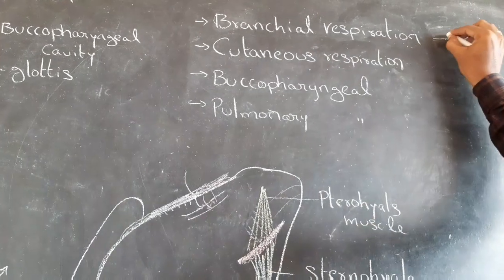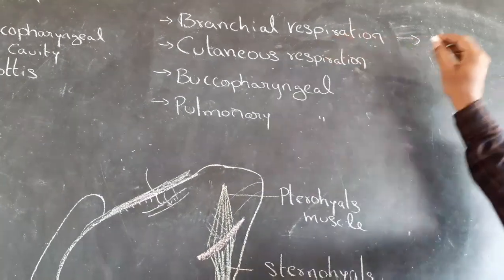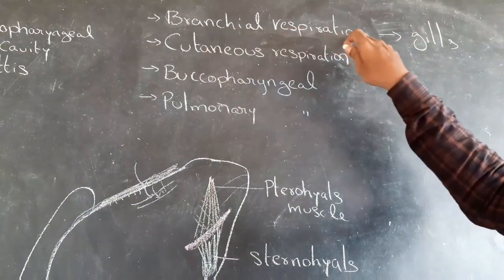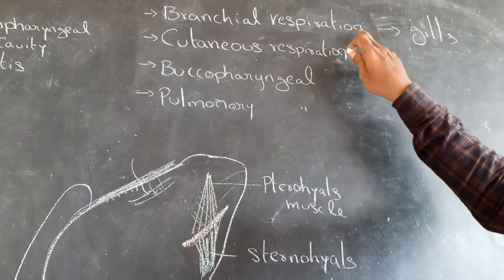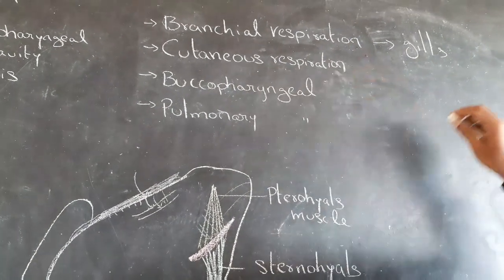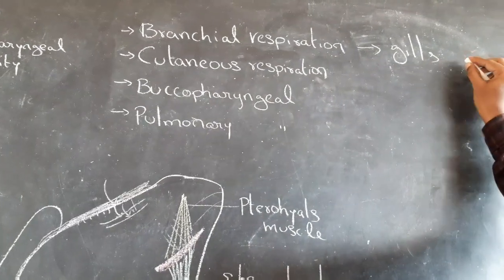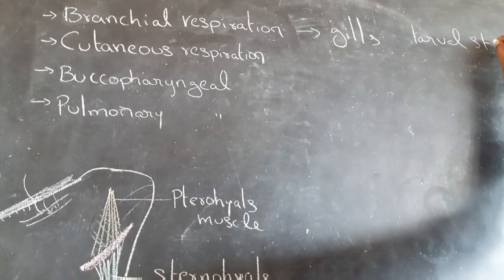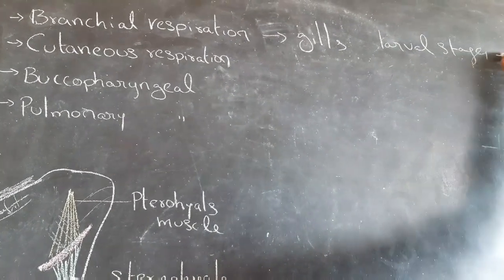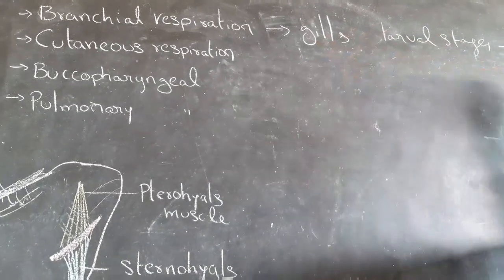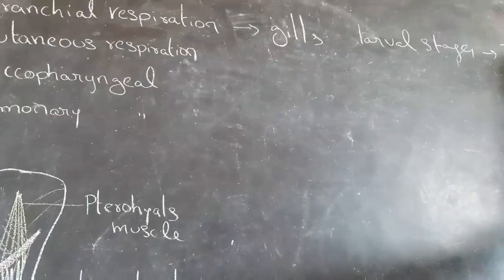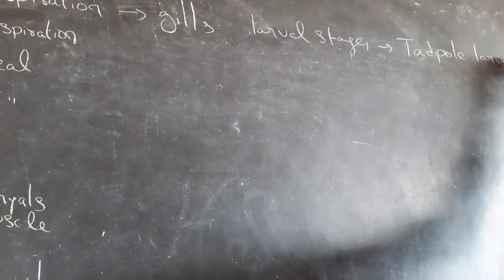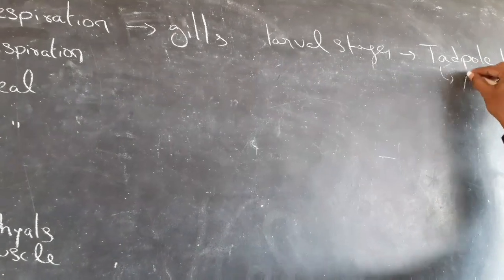Branchial respiration is respiration by gills. Branchial respiration occurs in the larval stages of frogs. The larval stage of frogs is tadpole larva. Tadpole larva is an aquatic organism.